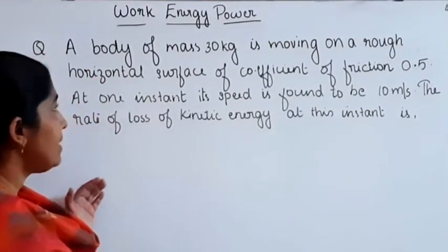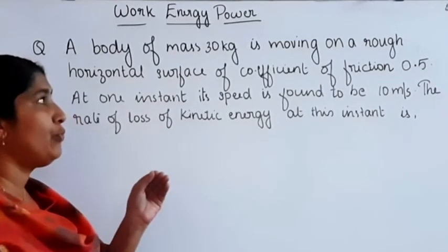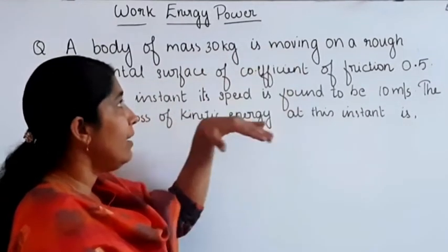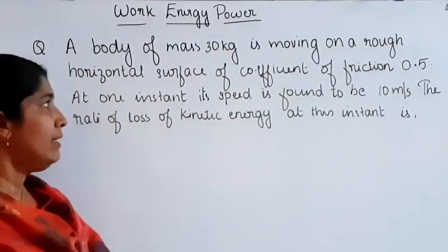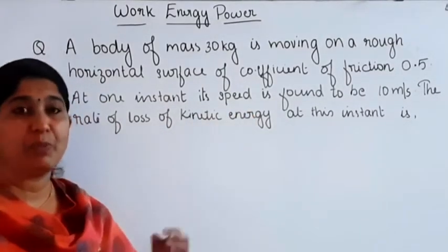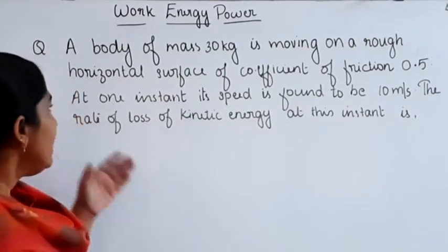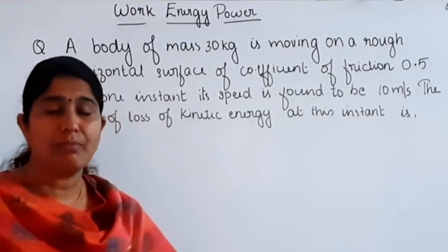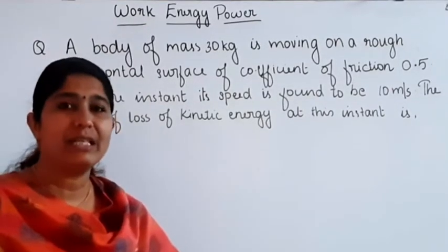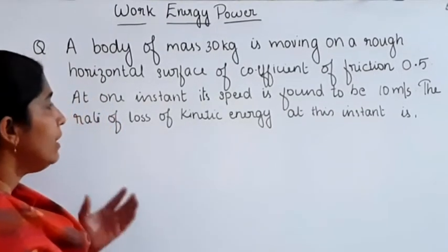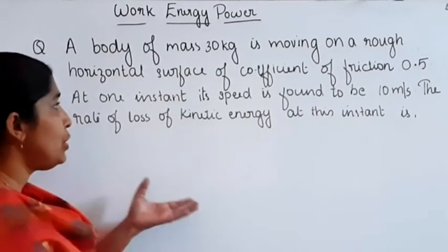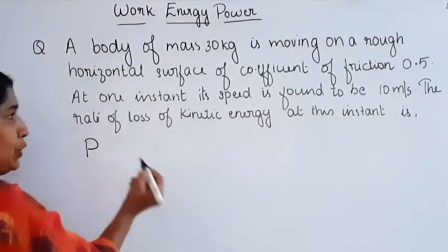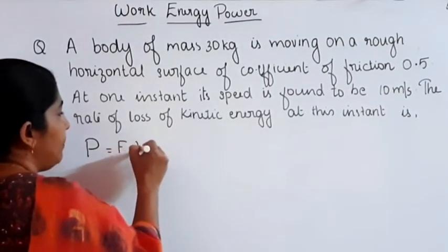Our second question: a body of mass 30 kg is moving along a rough horizontal surface with a coefficient of friction 0.5. At that instant its speed is found to be 10 meter per second. The rate of loss of kinetic energy at that instant is to be found. Rate of change of kinetic energy means rate of doing work, which is power. Power equals F dot V.